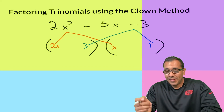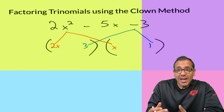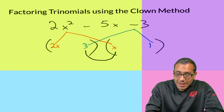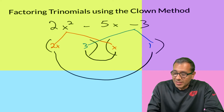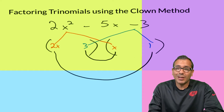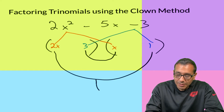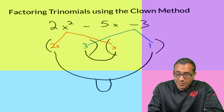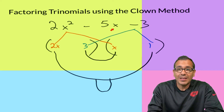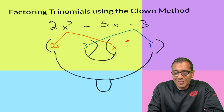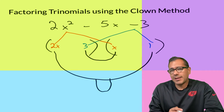To check, we multiply the inner terms — that gives us 3x — and then multiply the outer terms — that gives us 2x. As I start to form this, it kind of looks like a little evil clown, which is why it's called the clown method. Then I put the number that the two terms have to add up to equal: negative 5x.